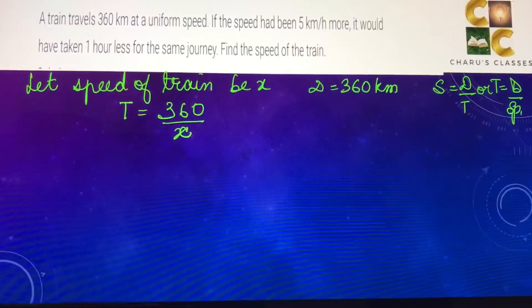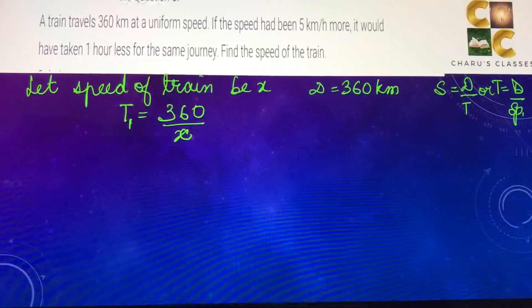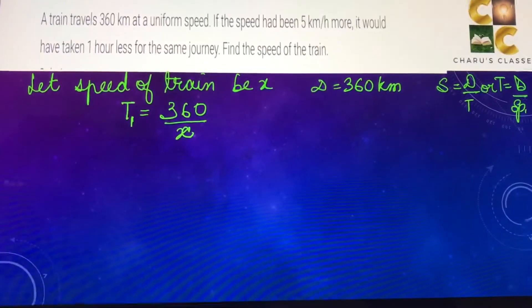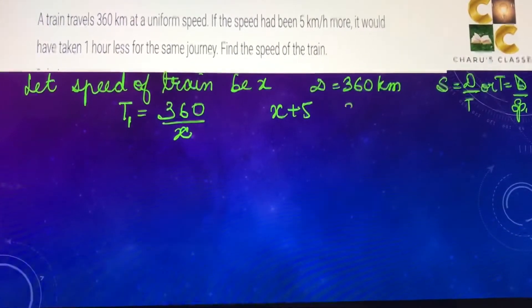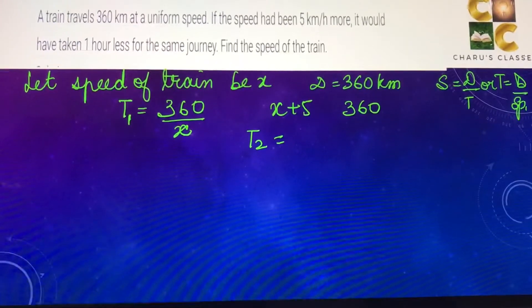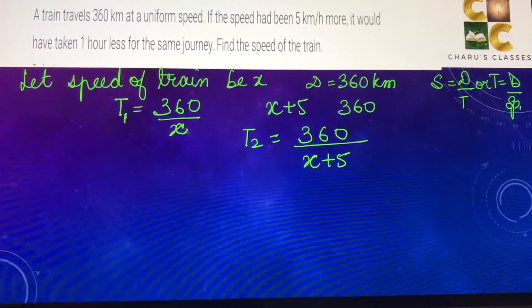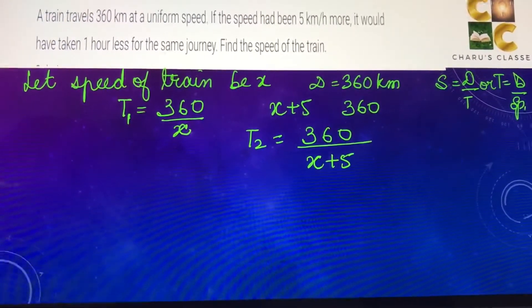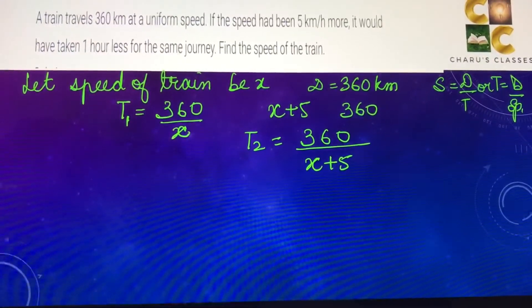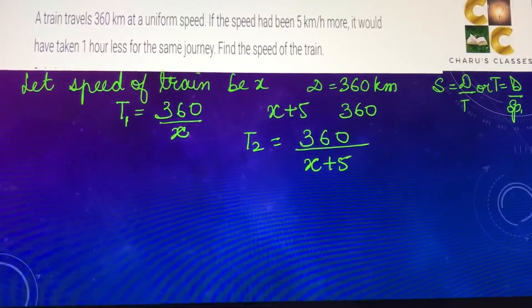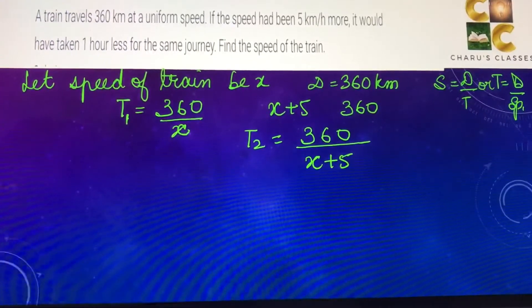Now if the speed had been 5 km per hour more, suppose we take this as T₁, and now we increase the speed by 5. The new speed will become x + 5. The distance remaining the same, which is 360. Now the new time, T₂ = 360/(x + 5), which is the new speed. It is given that when the speed is more, it would have taken 1 hour less for the same journey.